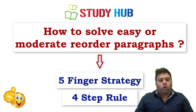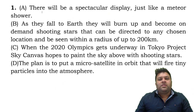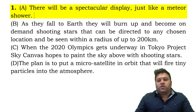When we look at a paragraph, our first task is to find the first sentence — an independent sentence that is introducing the topic. Looking at this particular sentence, it says 'there will be a spectacular display just like a meteor shower.' Is this an independent sentence? It's referring to something else — 'there will be' — we don't know what it refers to, so it's not independent.